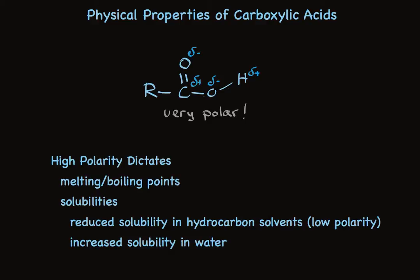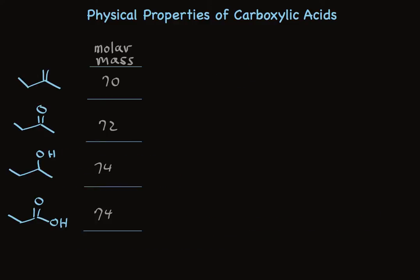Take a look at some data that illustrate the dramatic differences that result from the polarity of the carboxyl group. I've put on this screen four structures: one that is a hydrocarbon, one that has a carbonyl group, one that has a hydroxyl group, and then one that has both the carbonyl group and the hydroxyl group, the carboxylic acid.